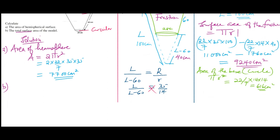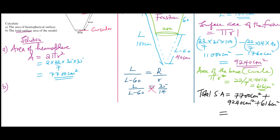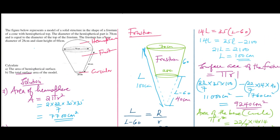Therefore, the total surface area is given by: area of hemisphere + area of frustum + area of circular base = 7700 + 9240 + 616 = 17,556 cm². That is how you work out this question.